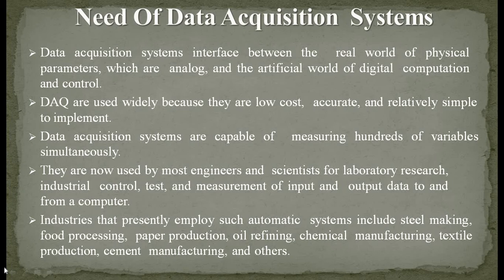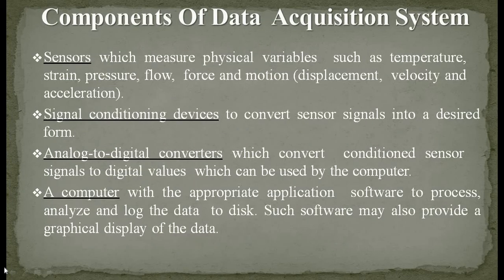Industries that presently employ such automatic systems include steel making, food processing, paper production, oil refining, chemical manufacturing, textile production, cement manufacturing, and others. The components of a data acquisition system include sensors, which measure physical variables such as temperature, strain, pressure, flow, force, and motion — including displacement, velocity, and acceleration.